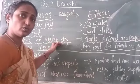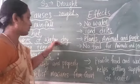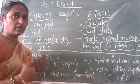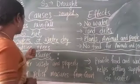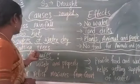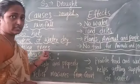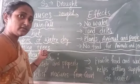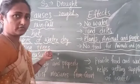When the temperatures are too hot, the water will dry up — the water will evaporate. And also, due to the cutting of trees, drought conditions can occur.